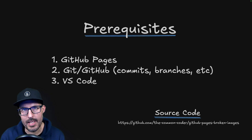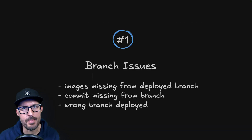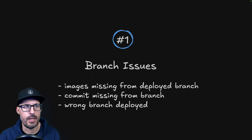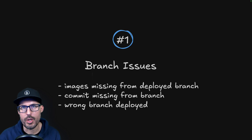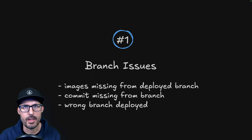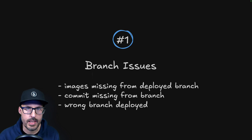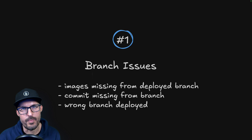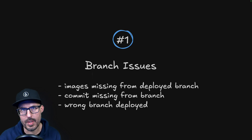With all that out of the way, let's get into the common reasons why your images might be broken on GitHub Pages. The first reason is related to branch issues — this could be images missing from the deployed branch, a commit missing from that branch, or simply the wrong branch being deployed. I'm going to show you a couple of things you can check to see if this might be your issue.